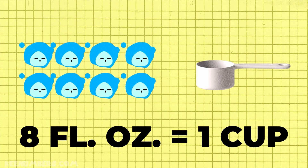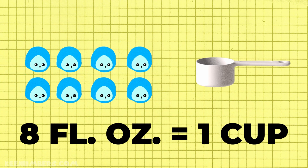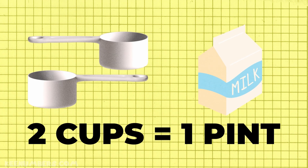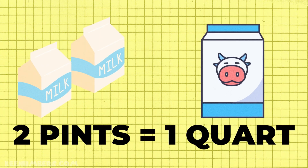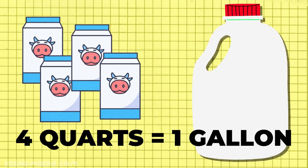There are 8 fluid ounces in a cup. There are 2 cups in a pint. There are 2 pints in a quart. There are 4 quarts in a gallon of milk.